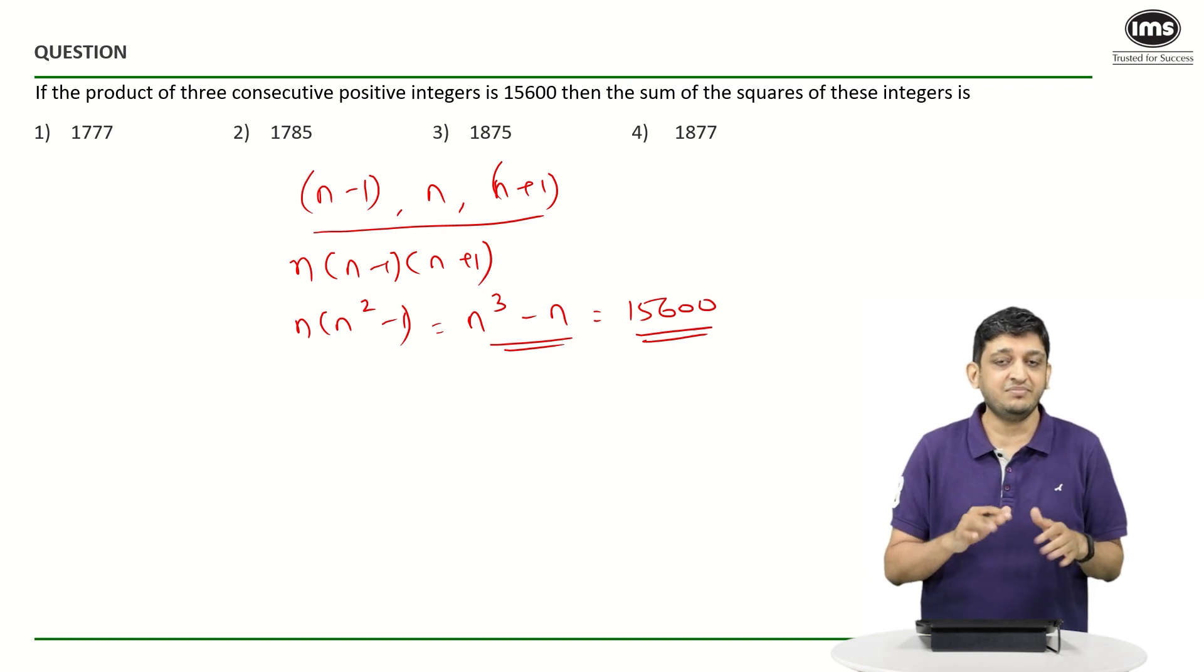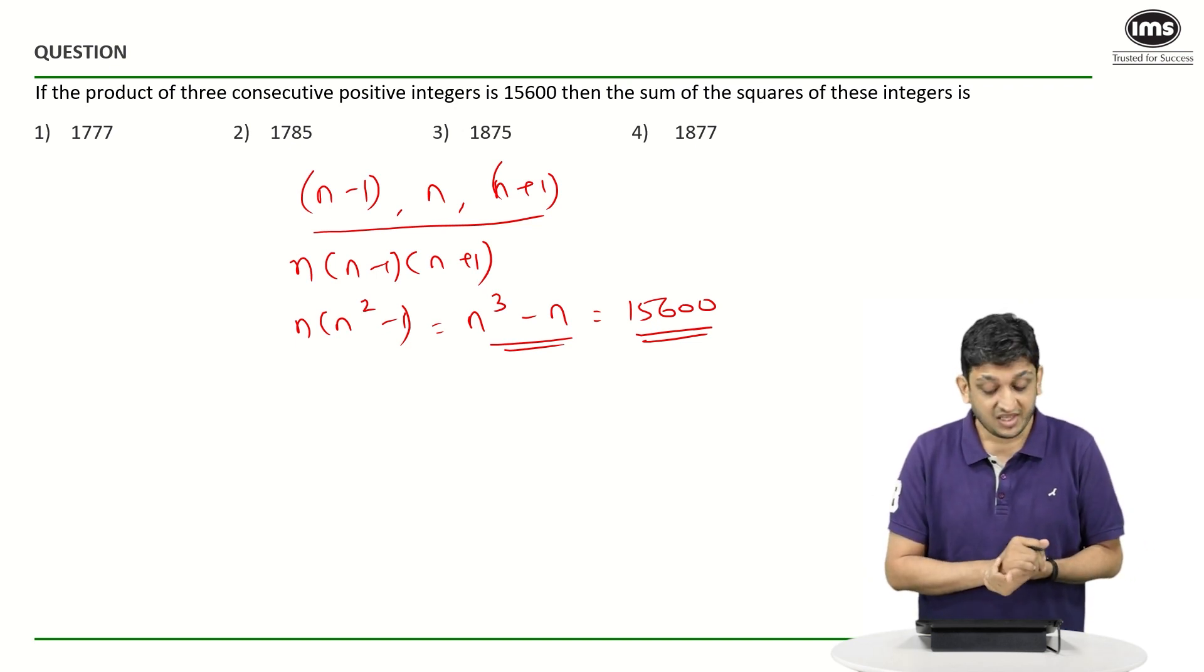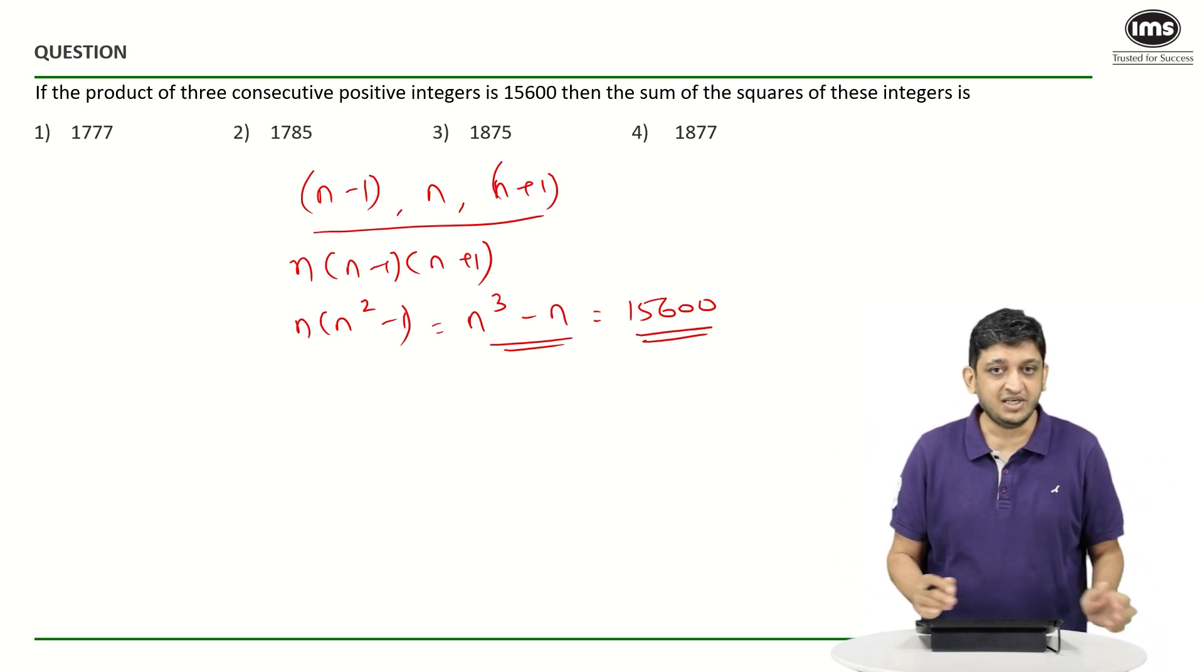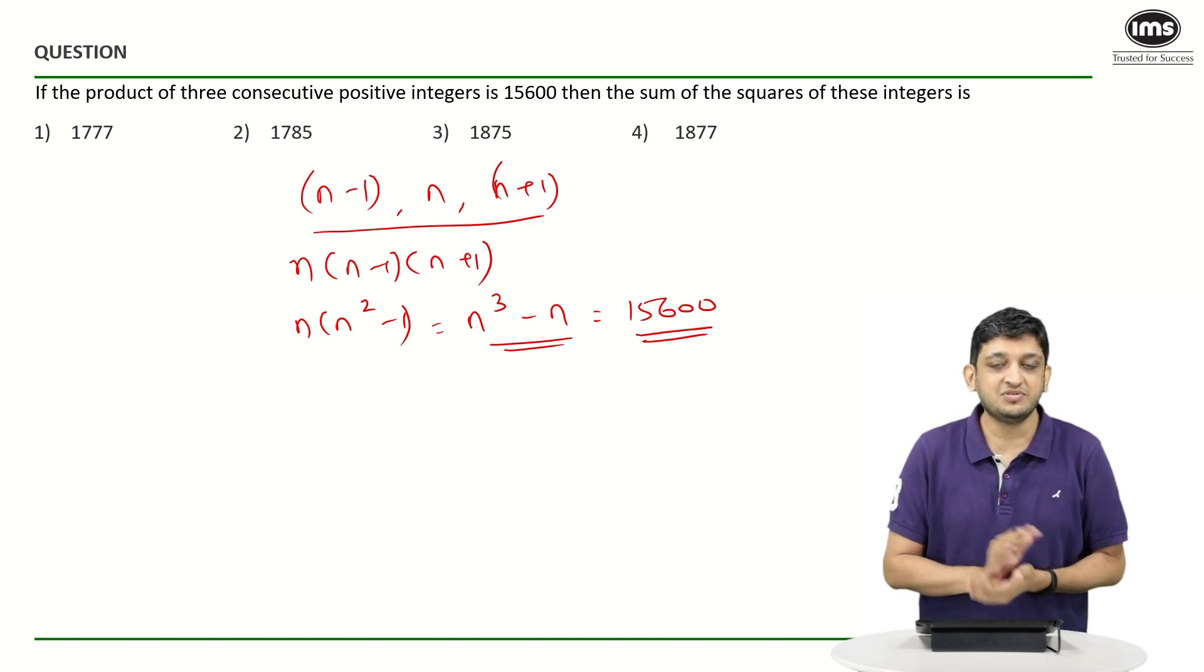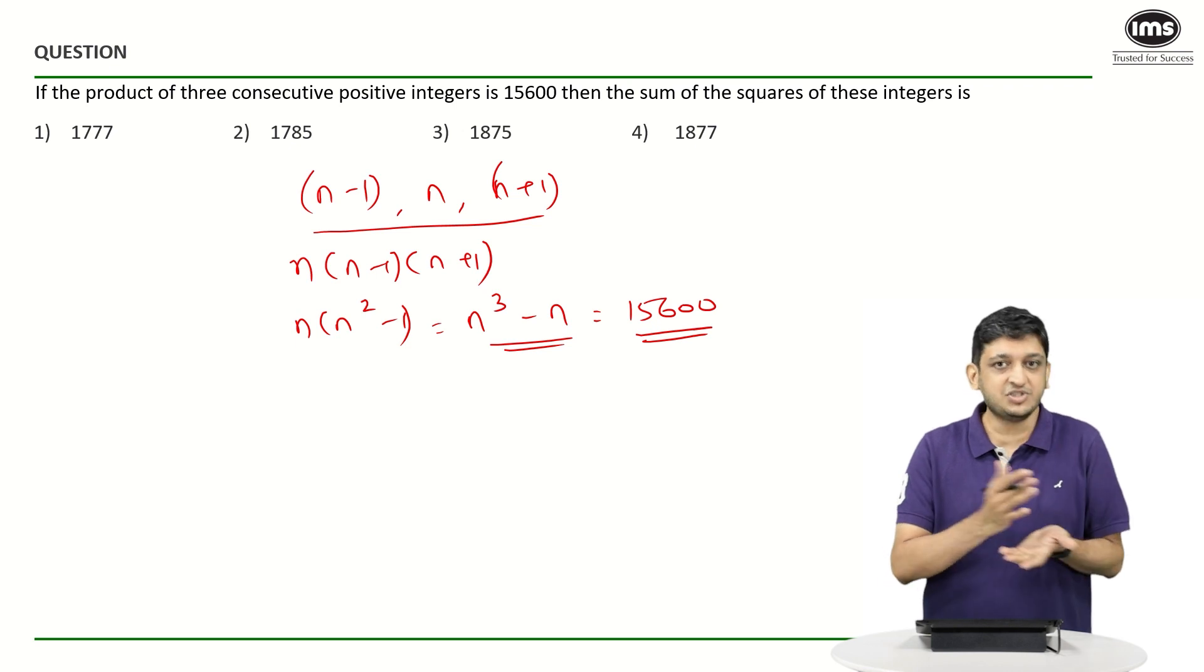As you progress, you will see that the cubes tend to become larger compared to the number that is being cubed in the first place. So I know that n is going to be a small number, n³ is going to be a huge number, and that is why I know that 15600 is going to be very close to n³, or n³ is going to be very close to 15600.